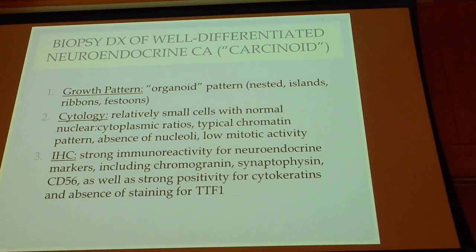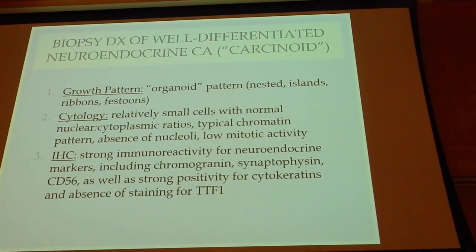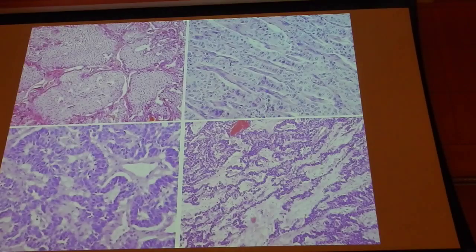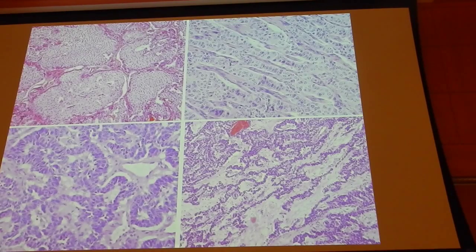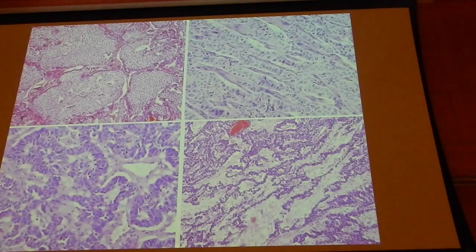For well-differentiated carcinoids, we expect a nice organoid pattern of nests, islands, ribbons, and festoons. Cells should be relatively small with normal nuclear-to-cytoplasmic ratios, salt-and-pepper chromatin, absence of nucleoli, low mitotic activity, and strong positivity for neuroendocrine markers. These are easy to diagnose on resection specimens. Here we see examples with nested, trabecular, and serpentine growth patterns.